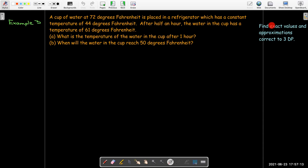We're going to find exact values to these answers, and then we'll find approximations correct to three decimal places. So starting with our equation here, I know that the surrounding temperature in the refrigerator is 44 degrees. The initial temperature, the temperature at time equals zero for our cup of water is 72 degrees. And so I can put those into my equation. Now if I take 72 minus 44, I'm going to get 28.